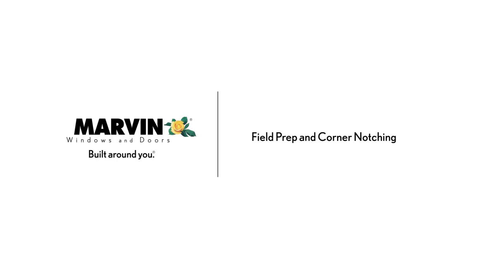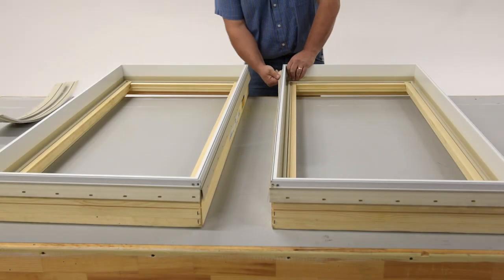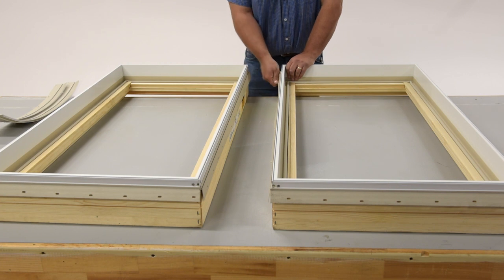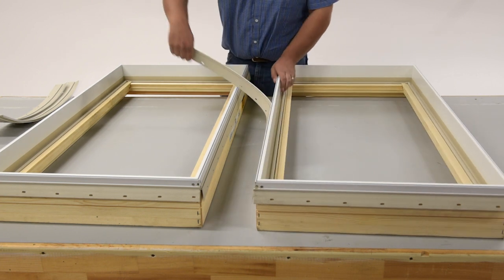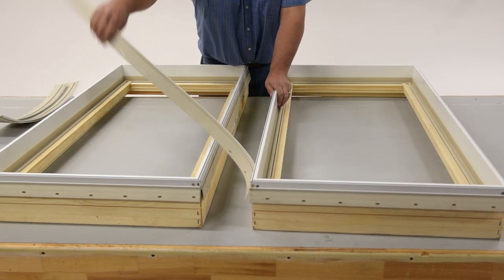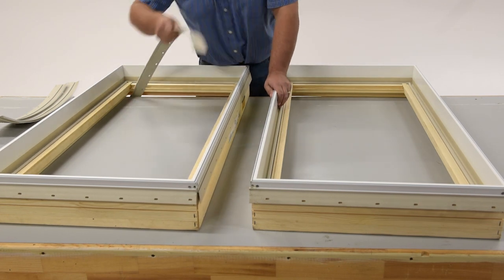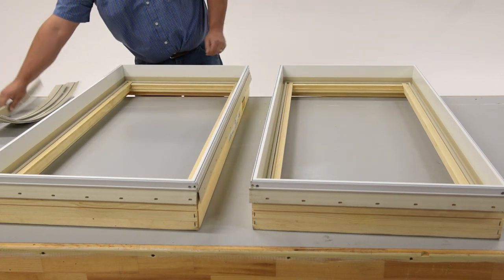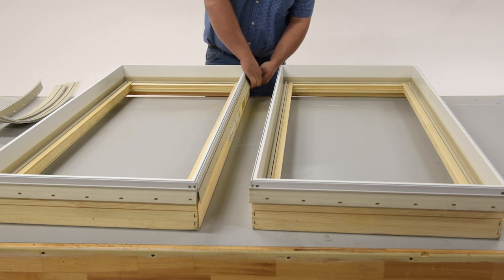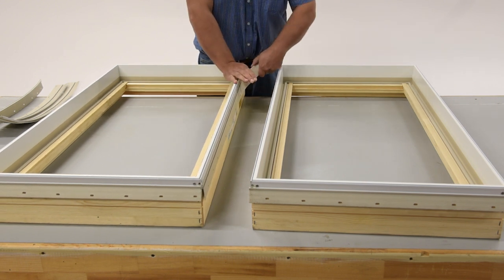Field prep and corner notching. The first thing to do to prep your units for field mulling is to remove any nailing fin or drip cap that is attached to the frame where a mull will take place. You will also want to remove the drip cap from individual units where a vertical mull will take place.